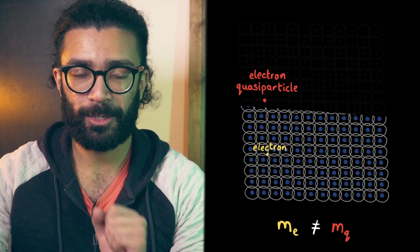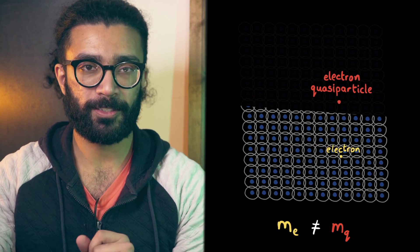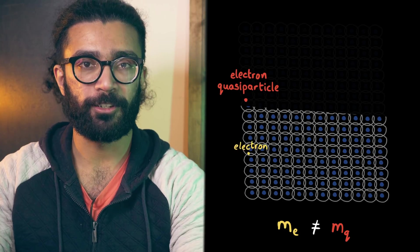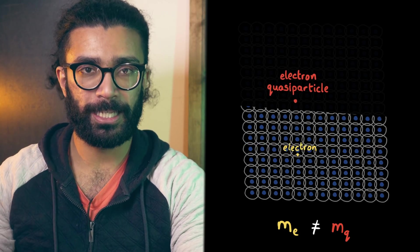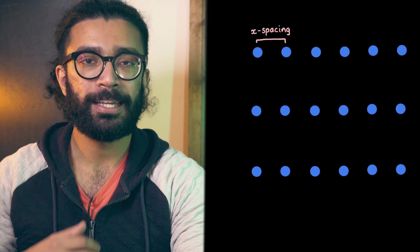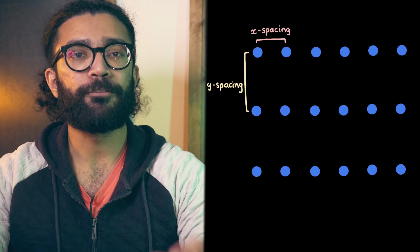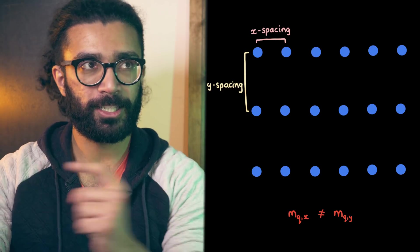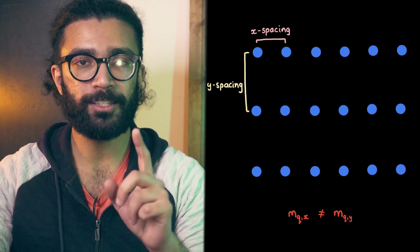This quasiparticle that we've come up with can be called the electron quasiparticle. And in more complicated materials, where the periodic potential in this direction, for example, is different to the one in this direction, the effective mass can depend on what direction the electron quasiparticle is moving in.